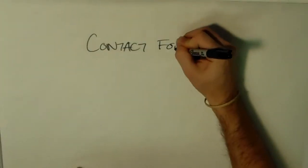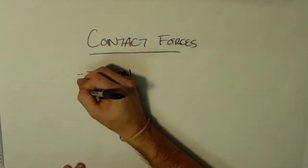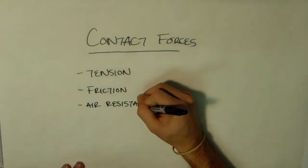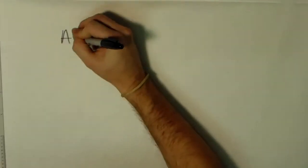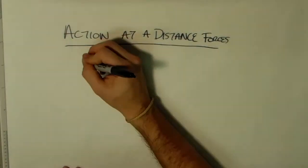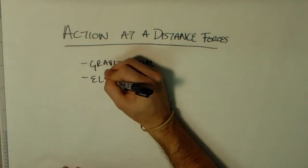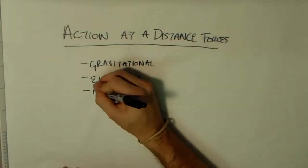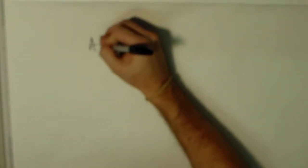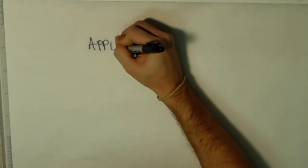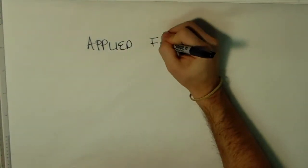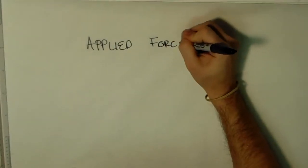There are two primary types of forces: contact forces, which include tension, friction, and air resistance, and action at a distance forces, which include gravitational, electrical, and magnetic. Some of the forces included in the act of playing soccer are applied force, gravitational force, normal force, friction force, and air resistance.